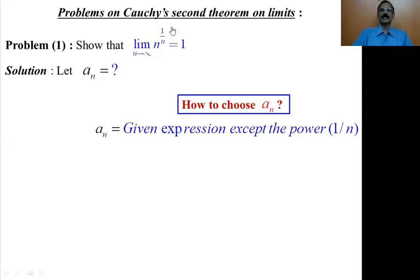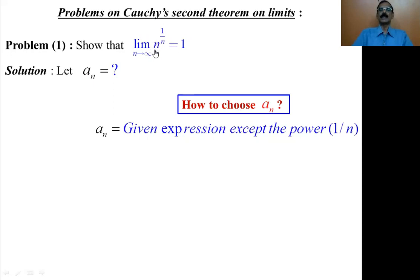The given expression is n to the power 1 by n. Now what is a_n? It is the given expression except the power 1 by n — we leave the 1 by n. What is left over? Only n is left over. Therefore, a_n is n.